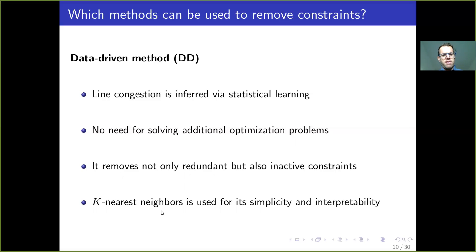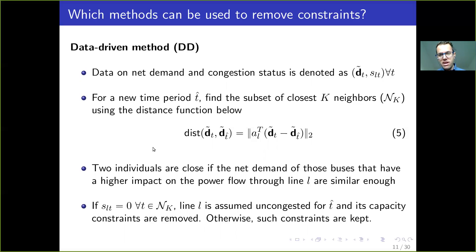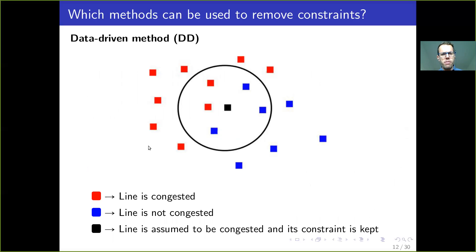The method we propose is a data-driven method in which we learn whether lines are congested using statistical learning. One advantage is that we don't need any additional optimization problem. The method we use is K-nearest neighbors, because it's simple and interpretable. We assume we have historical data on demand and the congestion status of a given line. When a new time period arrives, we find the closest neighbors based on demand. If all K neighbors show an uncongested line, we remove that constraint; if even one neighbor shows congestion, we keep the constraint.